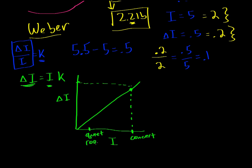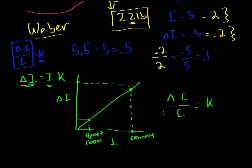This law generally holds true for almost any type of stimulus and is a good rule of thumb — not set in stone, but how most sensations operate: a bigger background intensity requires a bigger difference threshold to perceive a change. In real-world applications, people sometimes modify the equation by adding another constant — ΔI / I = K plus a constant — to account for the baseline level of activity that must be surpassed in real-world situations.